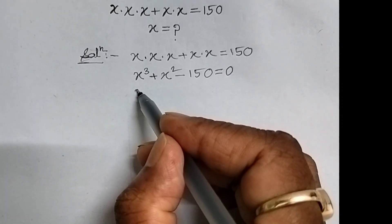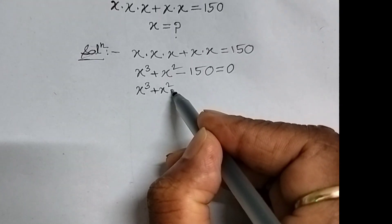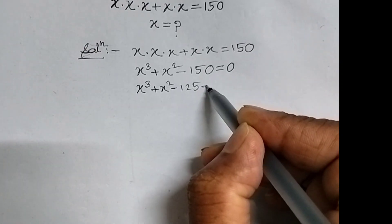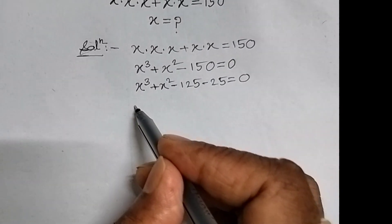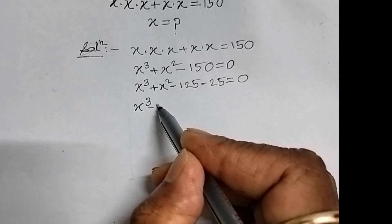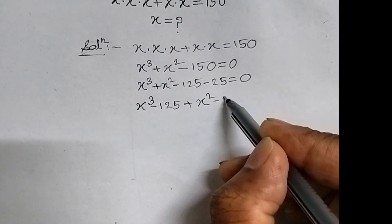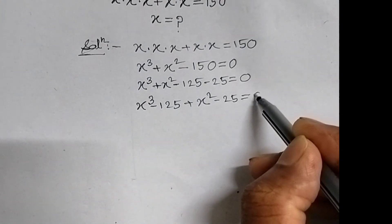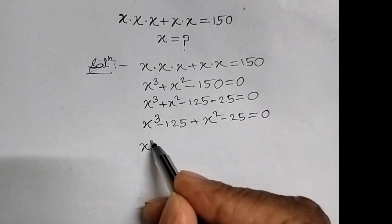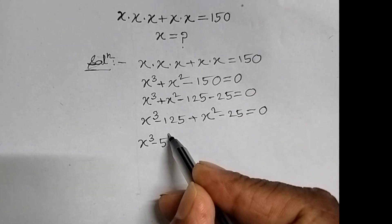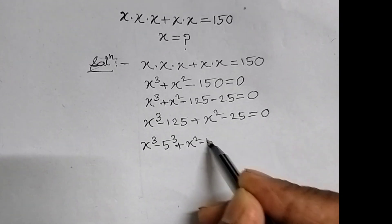Therefore, x cube plus x square minus 125 minus 25 equal to 0. Therefore, x cube minus 125 plus x square minus 25 equal to 0. In the next step, x cube minus 5 cube plus x square minus 5 square equal to 0.